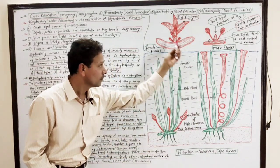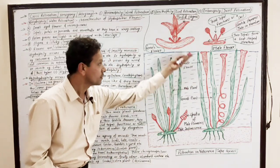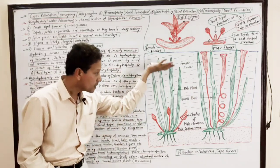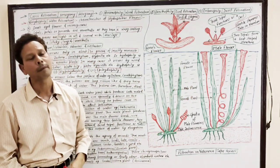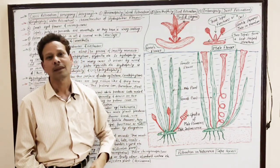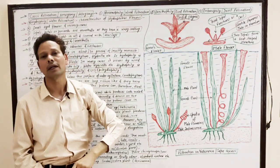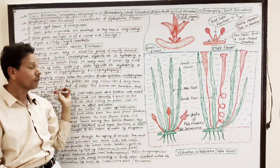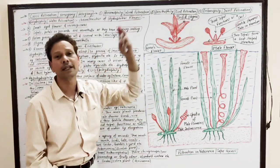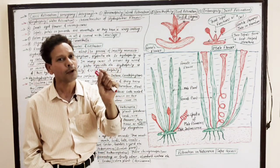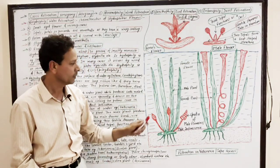In the case of Vallisneria, this is tape grass. It is an aquatic, submerged, dioecious plant because male and female plants are separate. It shows epihydrophily — pollination occurs on the surface of water. While in the case of hypohydrophily, pollination occurs inside the water. But here, in the case of Vallisneria, it is an example of epihydrophily — pollination occurs over the surface of water.